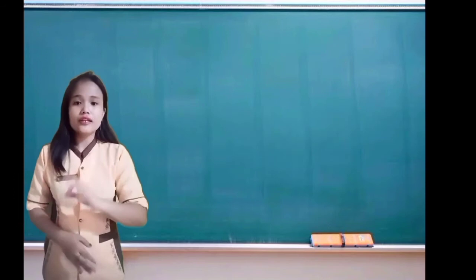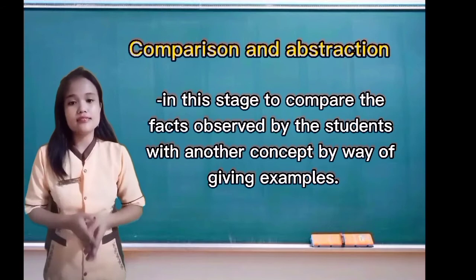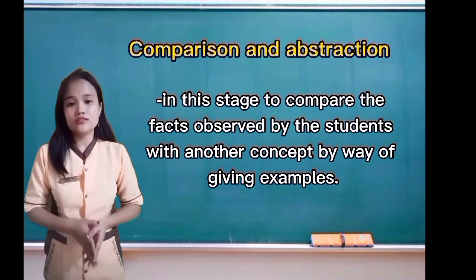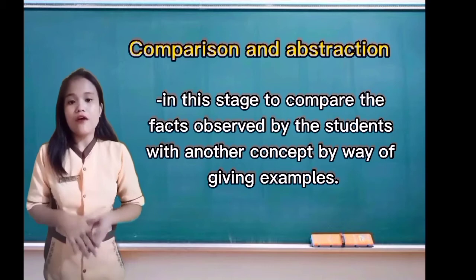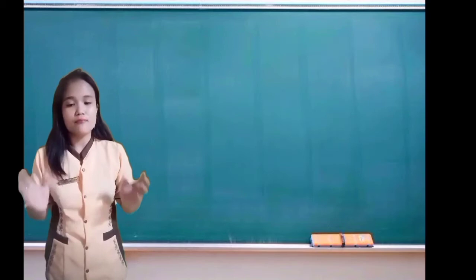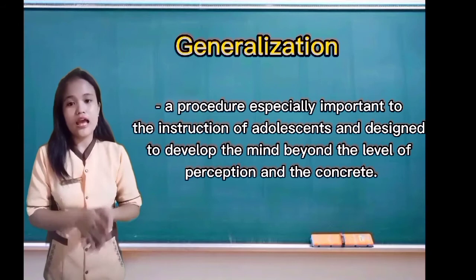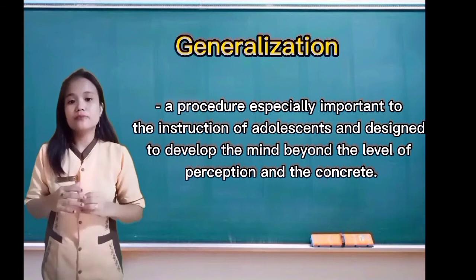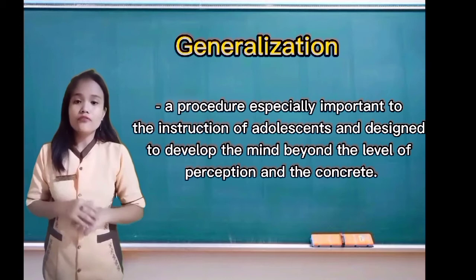Third is comparison or association. More importance should be given to comparing facts observed by students with another concept by way of giving examples. By making use of this comparison, students can derive definitions or theories. Students are encouraged to give their own suitable examples for the concept, rather than examples given in the book, to make them think in an innovative manner. Fourth is generalization, designed to develop the mind beyond the level of perception in the concrete. As far as possible, the task of formulation should be left to students.